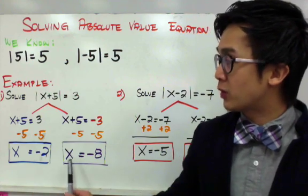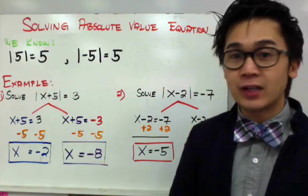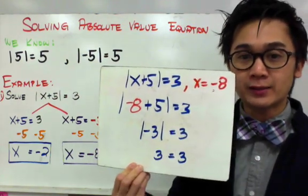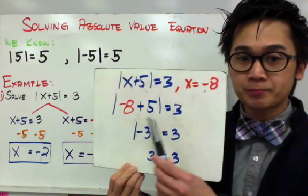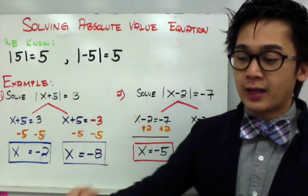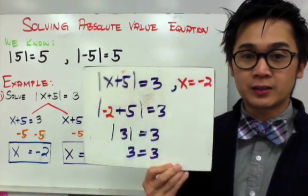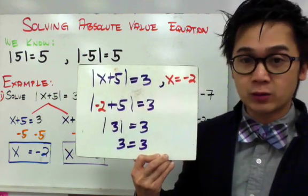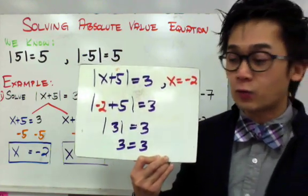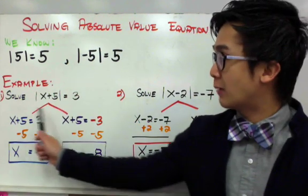Both numbers will be true if you plug them into the equation. If I choose negative 8 and replace x, evaluating the equation should give 3 — and it does. Plugging in x equals negative 8 gives the absolute value of negative 3, which equals positive 3. Similarly, plugging in x equals negative 2 gives negative 2 plus 5 equals 3, and the absolute value of 3 is also 3. Therefore, both x equals negative 2 and x equals negative 8 are valid solutions.